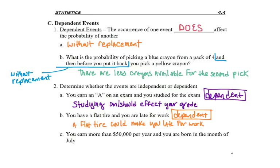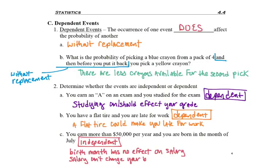And lastly, question C. If you earn more than $50,000 per year and you're born in the month of July, are these two items dependent upon each other or independent of each other? They're independent. Your birth month has no effect on your salary and your salary can't change your birth month. So one does not influence the other.